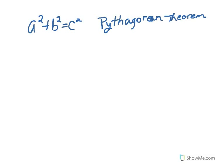The Pythagorean Theorem is A squared plus B squared equals C squared. Pythagorean Theorem. Put this in your notes.